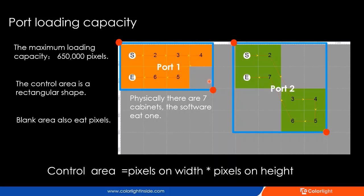So the total pixels of port 1 will be considered as 8 cabinets by the software. In the same way, there are 8 cabinets in port 2. The software will count all the pixels in the blank area, even though there is no cabinet in those parts. So the total loading capacity is 16 cabinets for this layout. As long as the total number of pixels in the control areas does not exceed 650,000 pixels, the system can display the screen correctly.